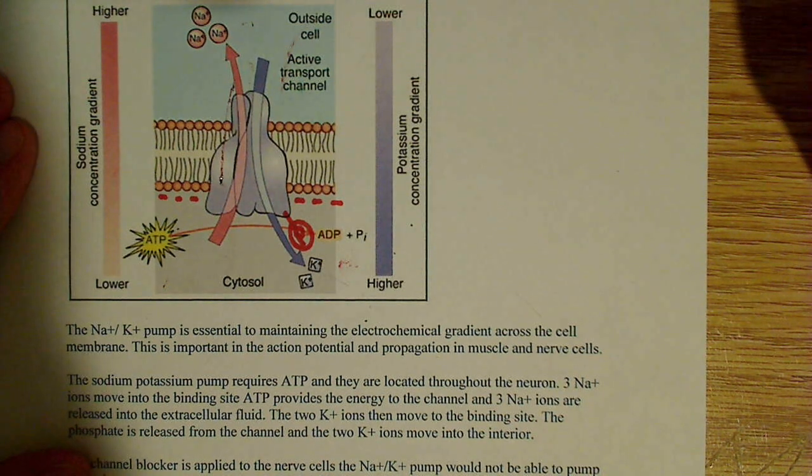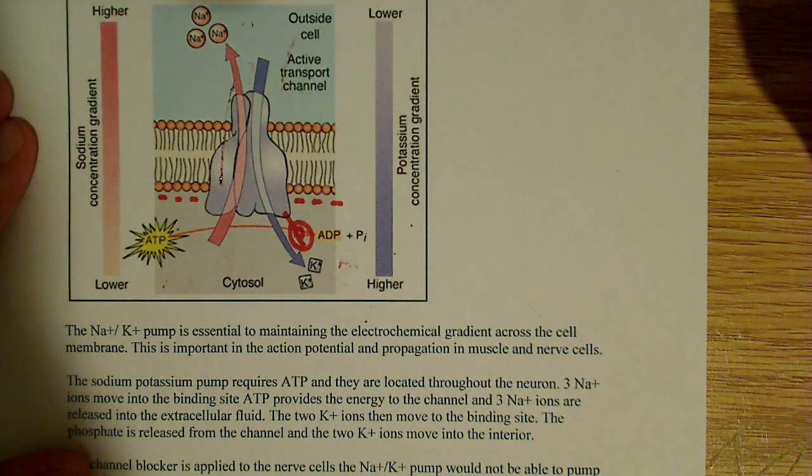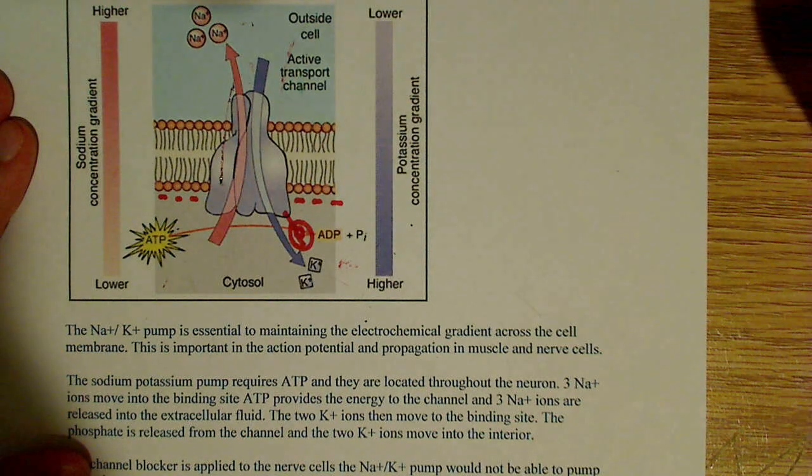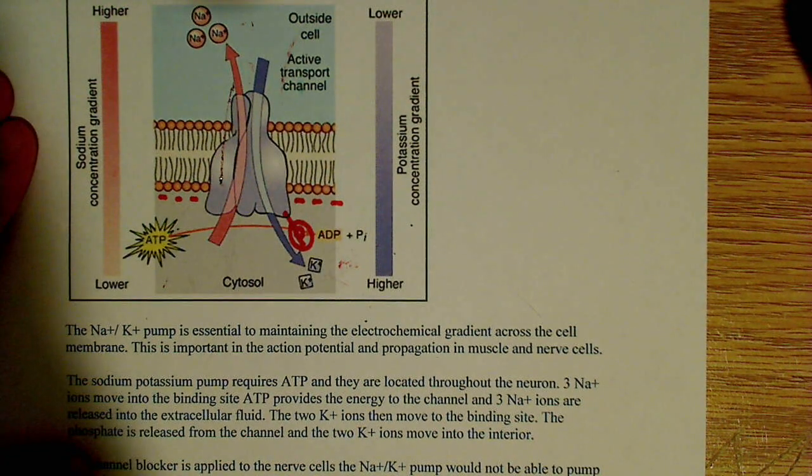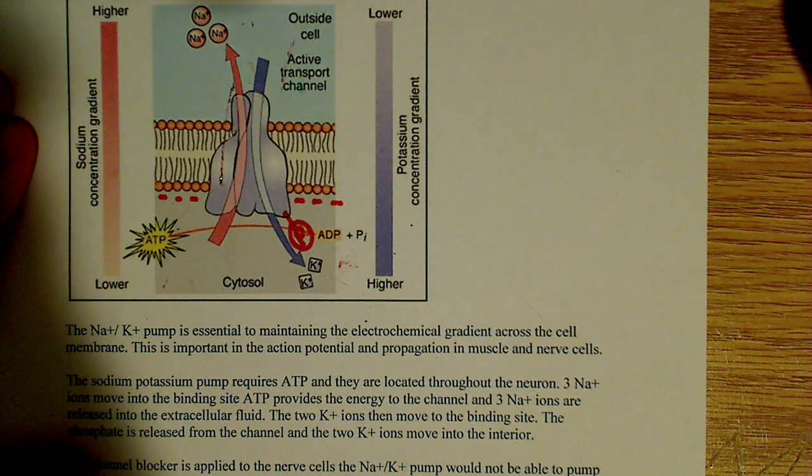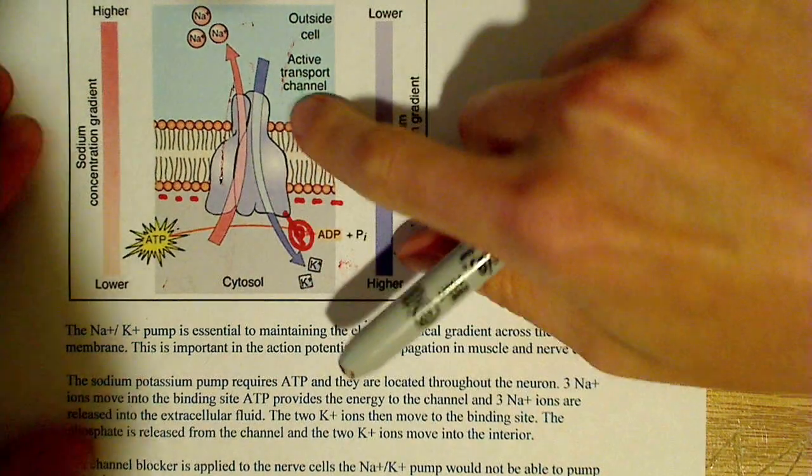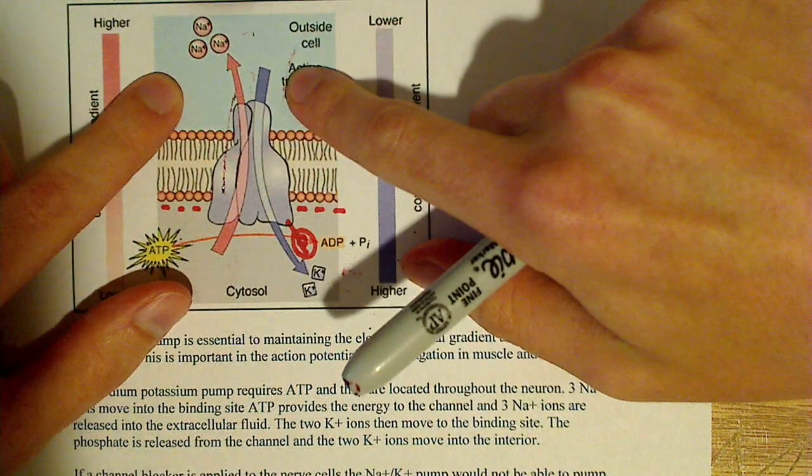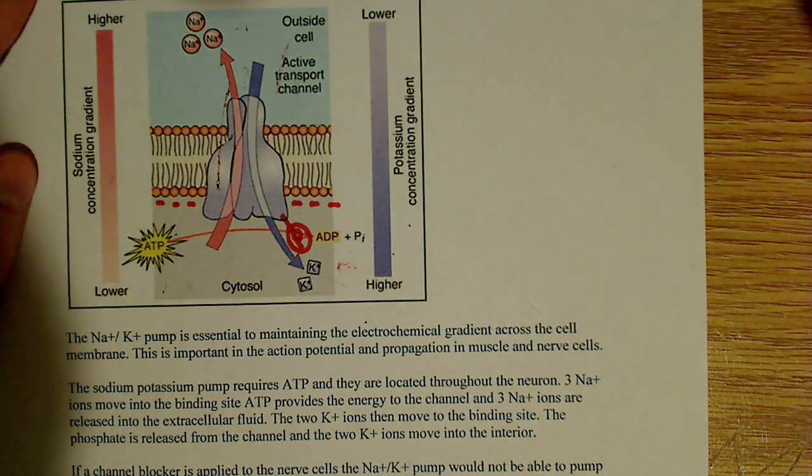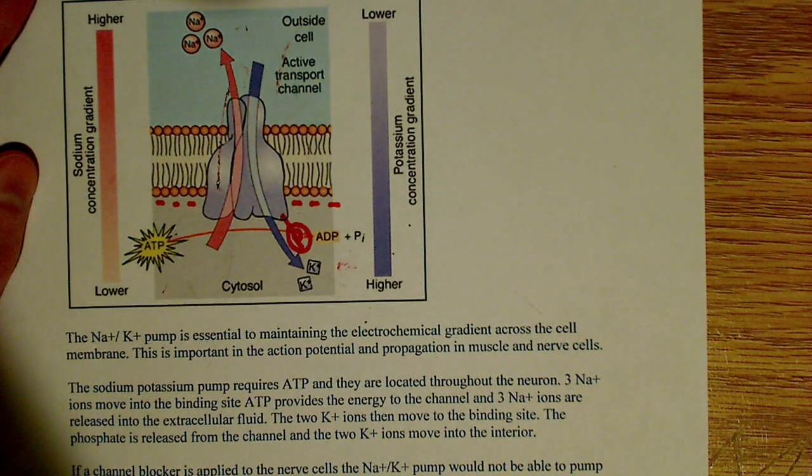So the phosphorylation causes the pump to switch its conformation, and through that switching of the conformation, it can release the Na+ to the exterior. So it can release the Na+ back outside of the cell over here through the conformational change from the phosphorylation.